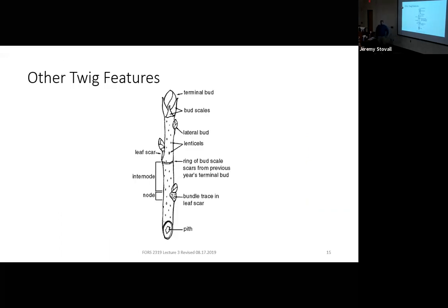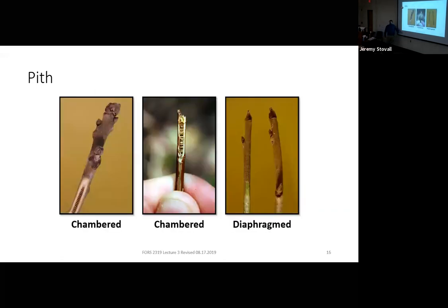You can whittle into the middle of a twig — this is a good reason to bring a sharp knife on a dendro lab. You can use pith as a confirmation feature. If you think something looks like a black walnut, whittle into it and check the pith — if it has hollow chambered pith that's nice and chocolate brown in color, that confirms it's a black walnut. Virginia sweet spire is a species that's harder to identify, but if you know it has chambered pith, that can be really helpful to confirm you do in fact have a Virginia sweet spire.